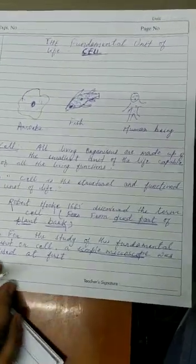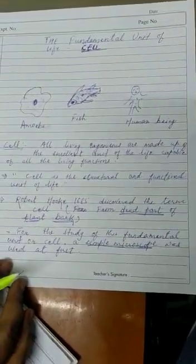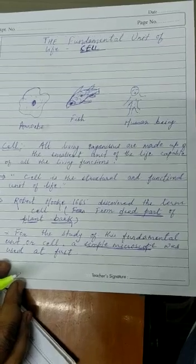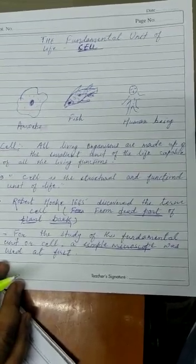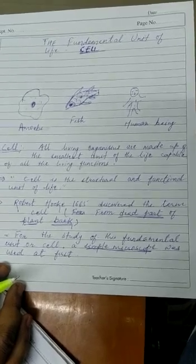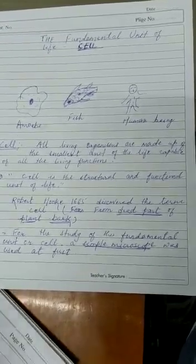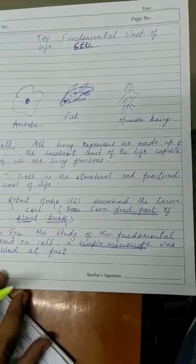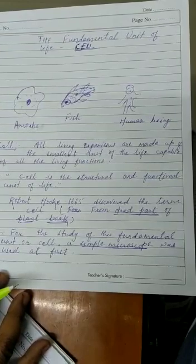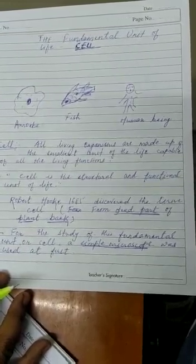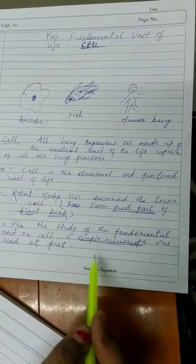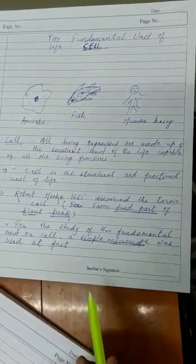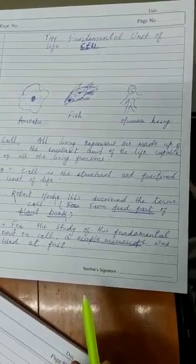Now we talk about the history of cell. Who discovered the cell? During the study of plants, Robert Hooke in 1665 discovered various hollow compartments from the bark of a plant and gave each hollow compartment the name 'cell.' This study required an instrument — a simple type of microscope, which was used by Robert Hooke.